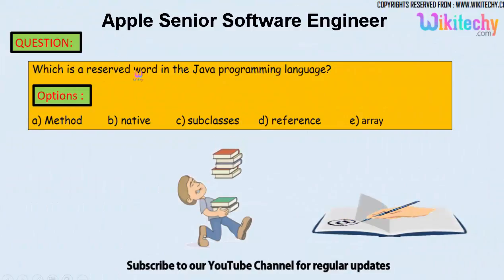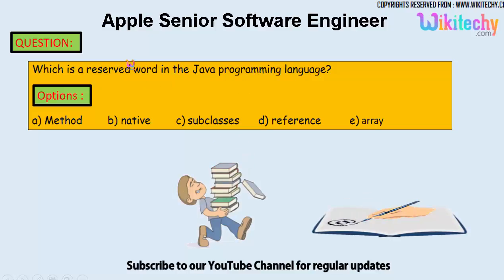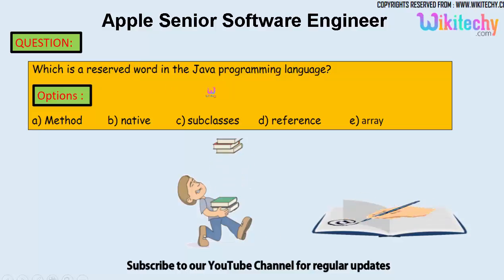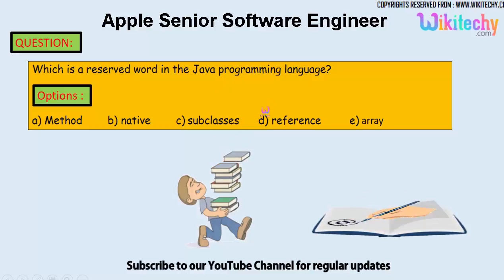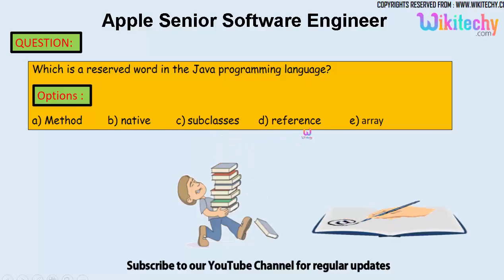Which is a reserved word in the Java programming language? That's the question. A reserved word, for example, is int — that's a reserved word. So such kind of reserved word in Java needs to be identified. The options are: method, native, subclasses, references, and array.